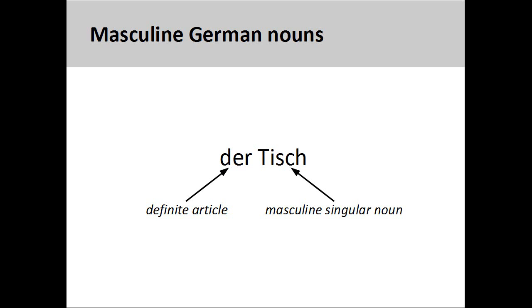The German noun 'Tisch,' meaning 'table,' has a masculine grammatical gender, so its definite article is 'der.' Here the grammatical gender does not indicate any biological gender of the noun.